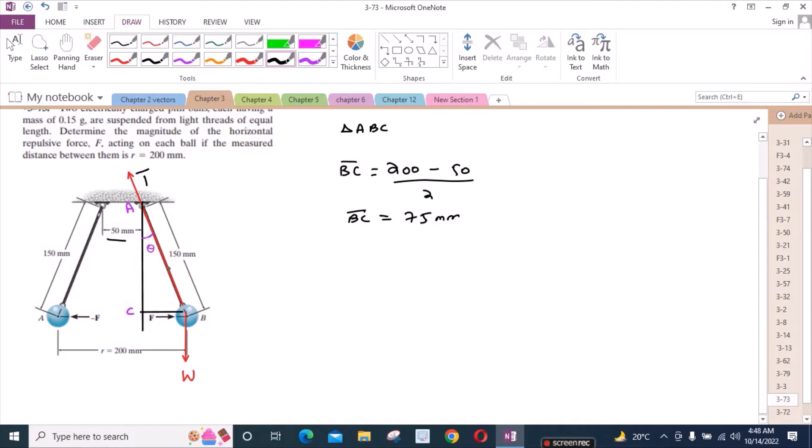To find this angle theta, if I apply the ratio of sine, sine theta is equal to 75 upon the hypotenuse, which is 150. So theta is equal to 30 degrees.